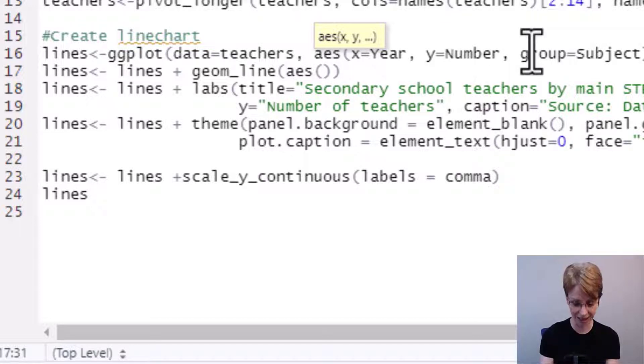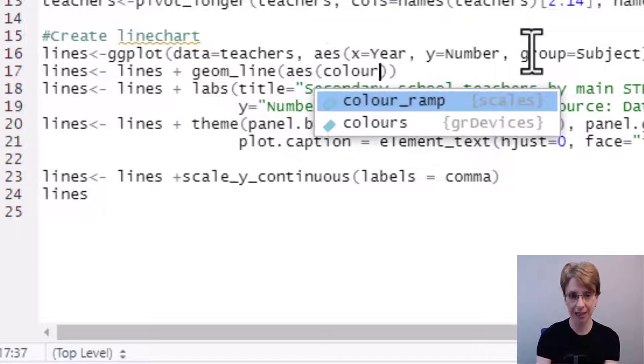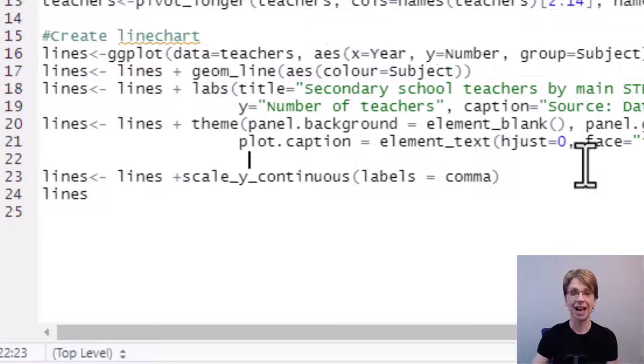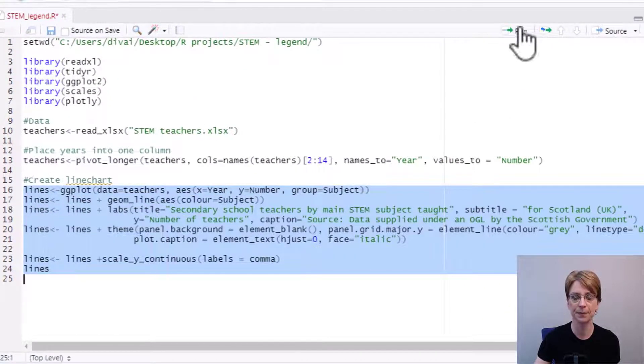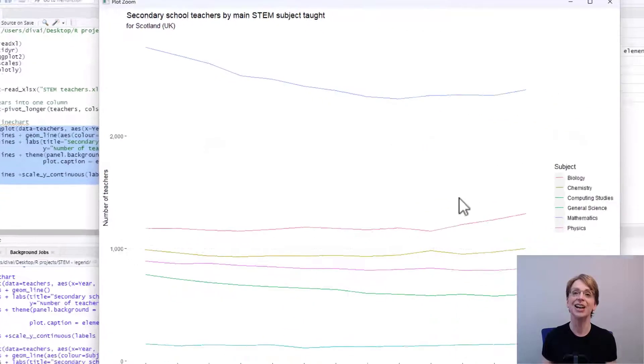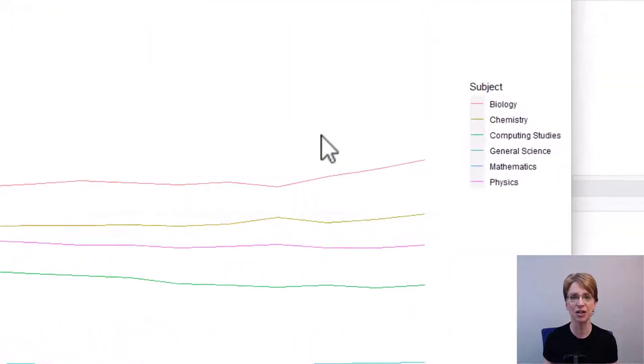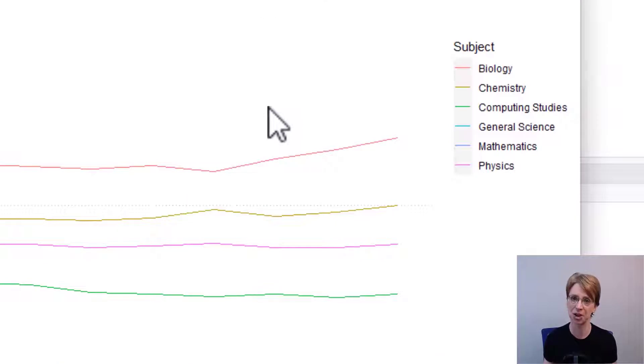So I type in colour equals and I would like each line to be coloured dependent upon the subject so we just type in subject and now if I run my code for my diagram you can see that each subject is represented in a different colour with the legend appearing at the side aiding the user to understand which colour relates to which subject.